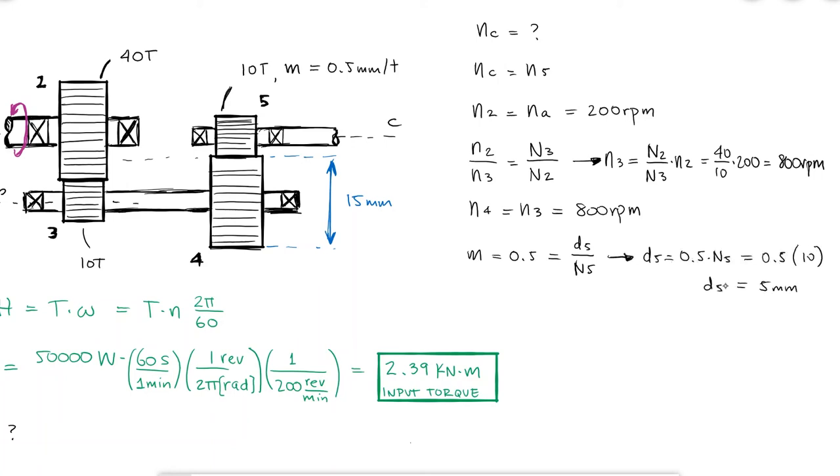Since I now have the diameters of gears 4 and 5, I would use the relationship between diameters and revs per minute for gears 4 and 5. From this, I find that the revs per minute of gear 5 is 2400 RPM, which is the same speed as the rotation of shaft C.